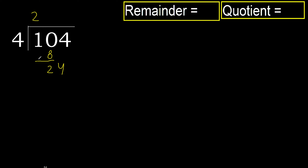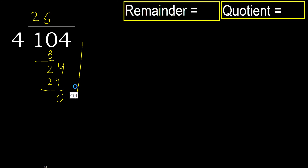24. 4 multiplied by 8 is 32 — 32 is greater. 4 multiplied by 6 is 24 — 24 is not greater. Subtract: 0. Next.